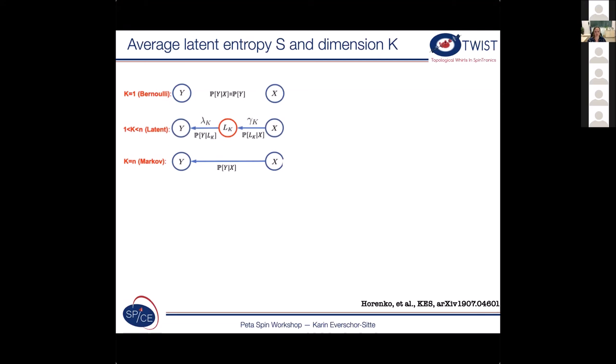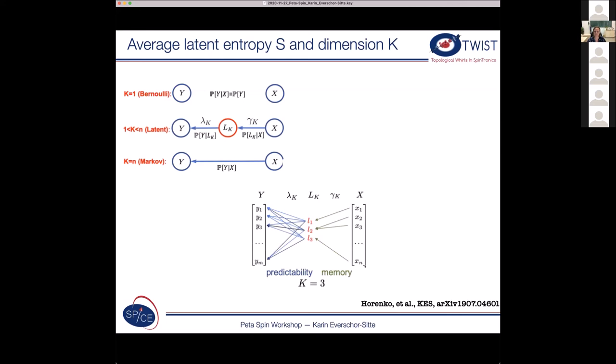If you want to put it in a different picture, then you can have different input values, different output values, and you can have some sort of latent variables in the middle. And actually, the mapping from here to here tells you something about the memory, and the mapping from there to there, something about the predictability.